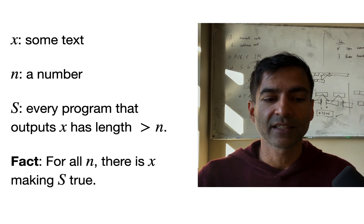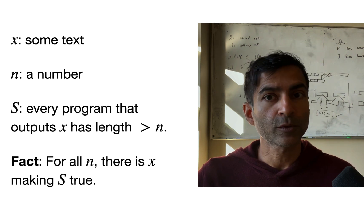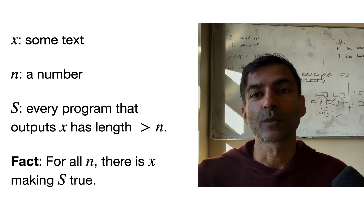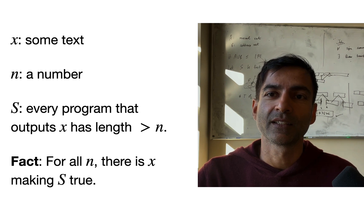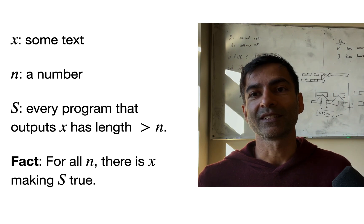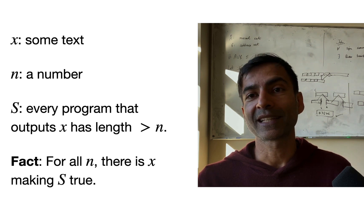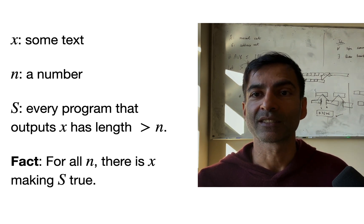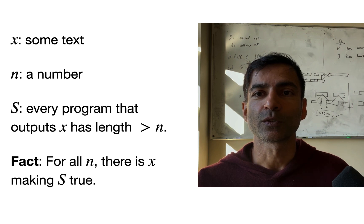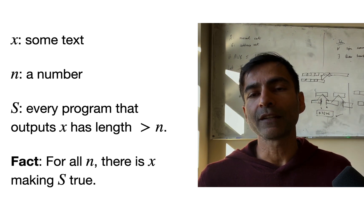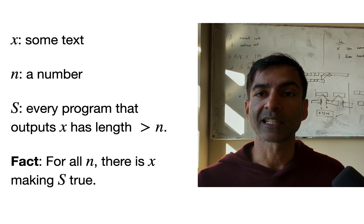It's easy to see that, given any fixed n, there's always going to be one x—in fact, infinitely many x—for which the statement S is true. That's because, given any fixed n, the number of programs of length n is a finite number. The number of potential strings x is infinite. So each one of those programs of length n can output at most one string when you run it. So the strings output by programs of length n is a finite set of strings. So there will be infinite number of x for which the statement S holds.